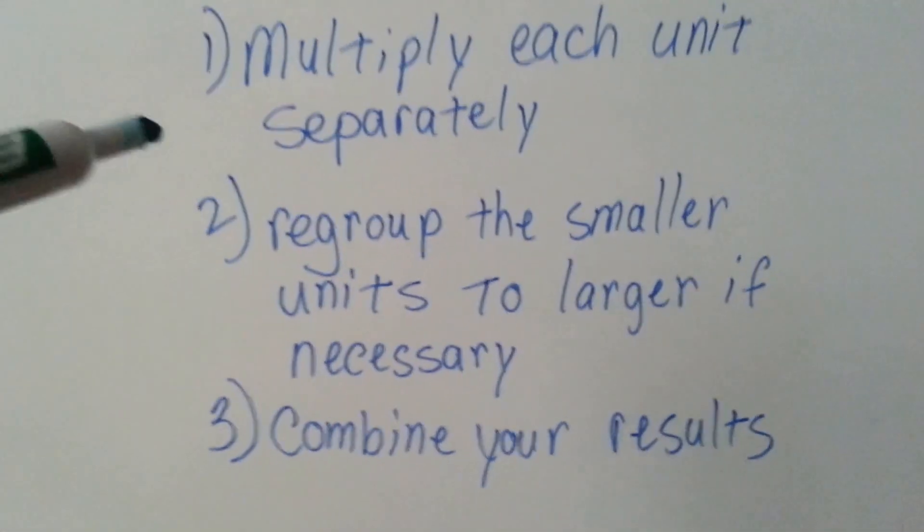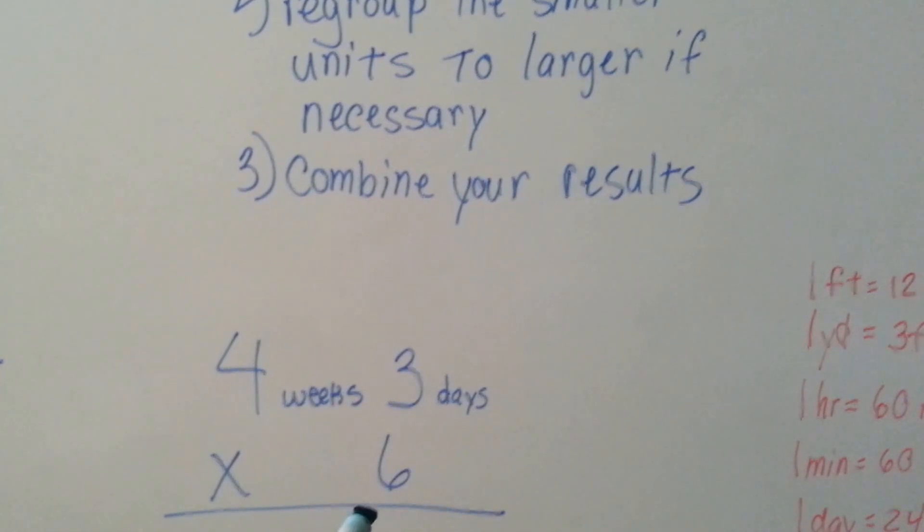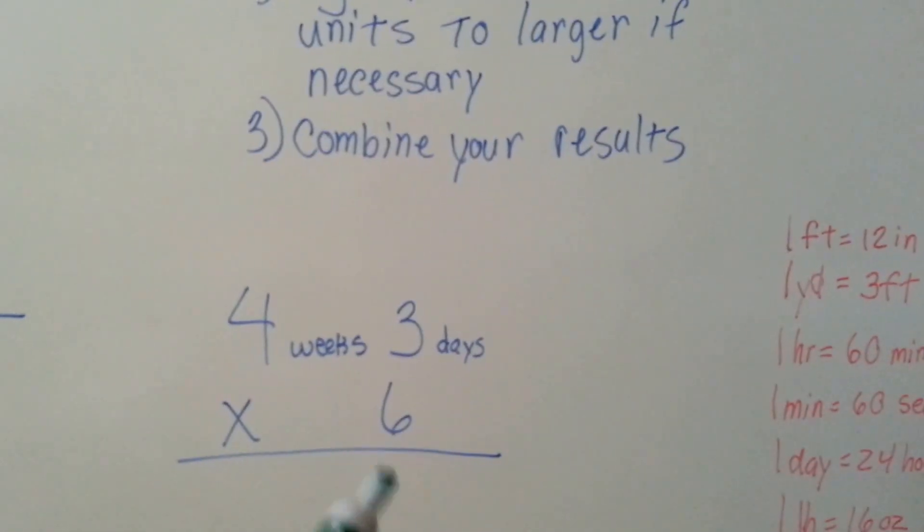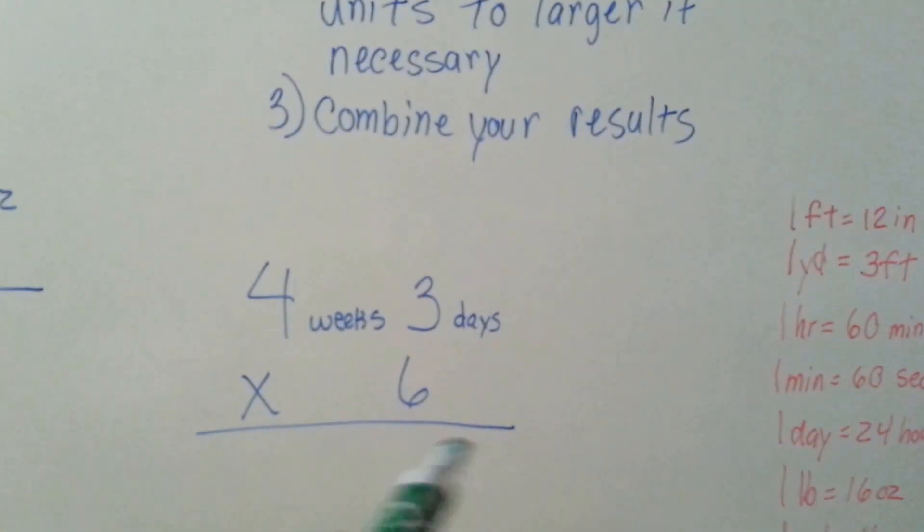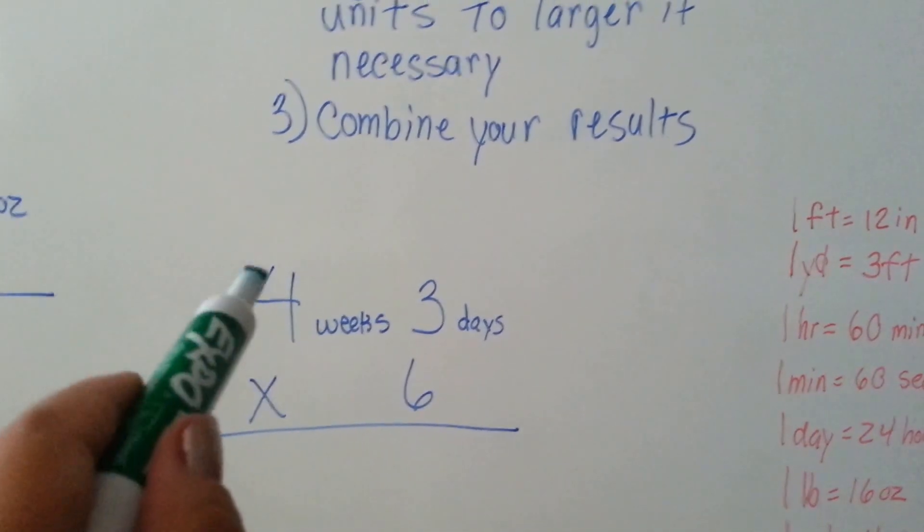What do I mean multiply each unit separately? Well, if you multiply 4 weeks and 3 days times 6, we're going to multiply the days and come up with our answer, then multiply the weeks, come up with our answer, then we're going to regroup the days to see how many weeks we could get out of them, and then add them to the weeks.